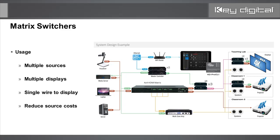They enable you to send a single wire to each display, reducing the amount of furniture, space, and wiring beneath each of those displays. It certainly reduces source costs by distributing video to multiple displays, allowing you to minimize how many video sources are purchased or rented, in the case of cable boxes.